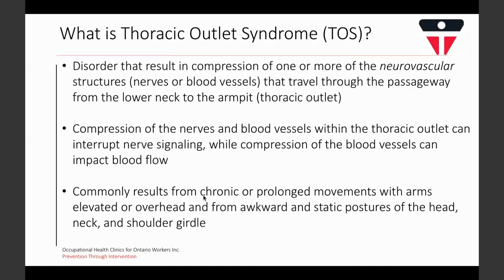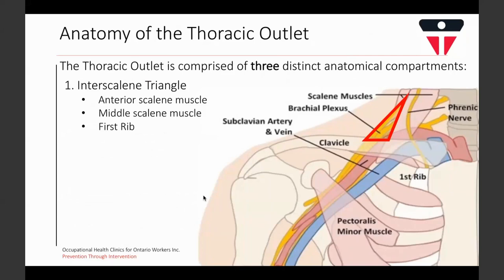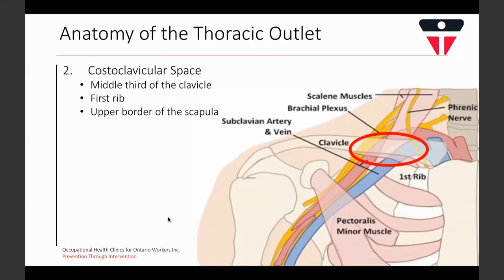Anatomically, the thoracic outlet is comprised of three separate compartments which together form the passageway from the neck to the armpit. The first compartment is called the interscalene triangle, where the nerves of the brachial plexus as well as the subclavian artery pass through the middle and anterior scalene muscles and above the first rib. The second compartment is the costoclavicular space, where the brachial plexus and both the subclavian artery and vein pass between the first rib and clavicle.